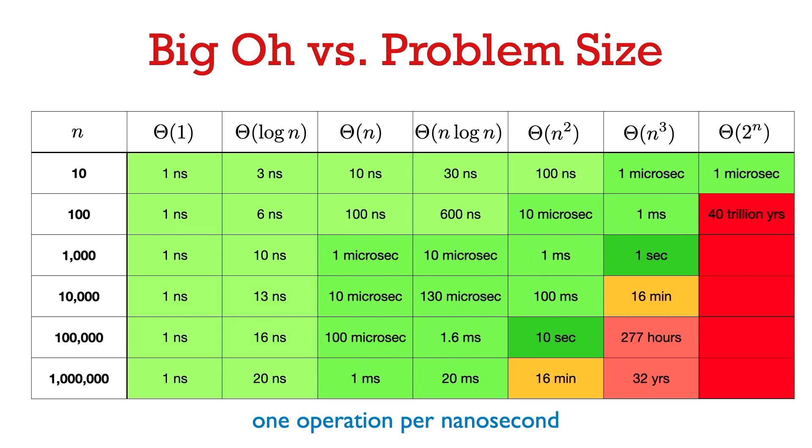Take this table with a grain of salt, but it can roughly tell you if you know the big theta running time of your algorithm, it can roughly tell you on what size input it's still feasible to run that algorithm.